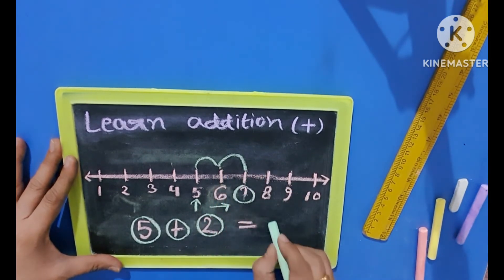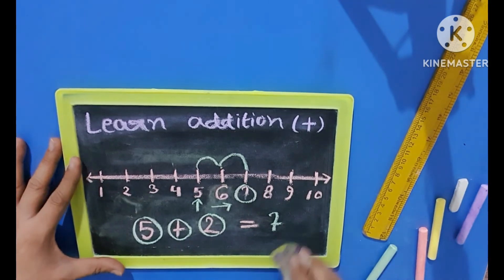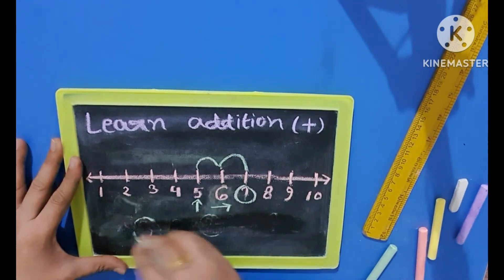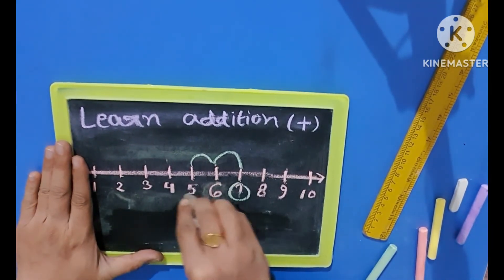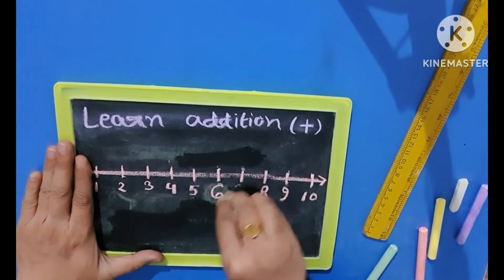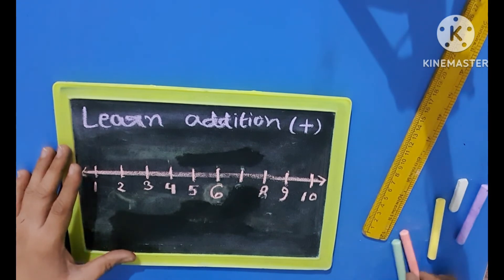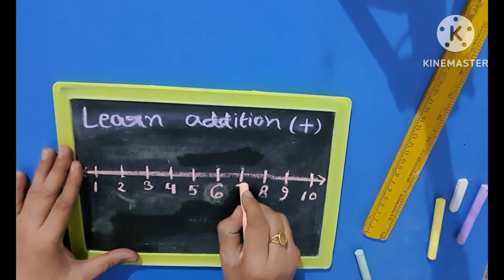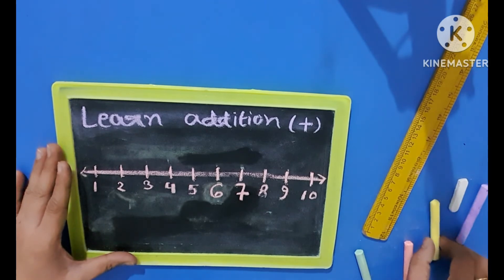And then we have to add 2 so we will jump 2 times and here we have found the answer. Answer is 7. Was it easy?